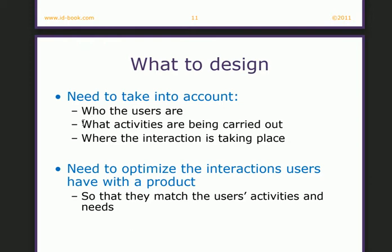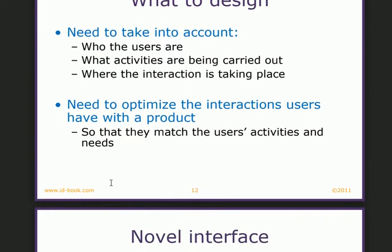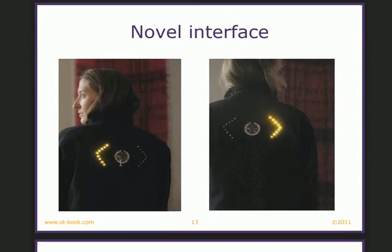Next is what design needs to take into account: these factors, and optimizing the interaction users have with a product. Then we have the example of a novel interface — you can see this lady is looking to the right and the indicator is blinking, and as she looks to the left the indicator blinks to the left.